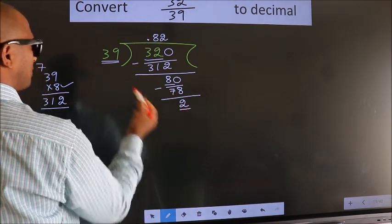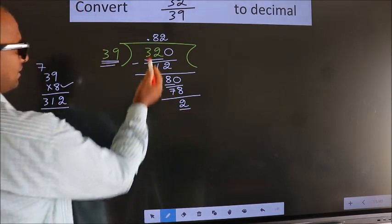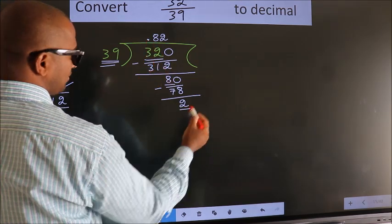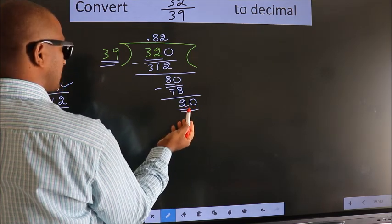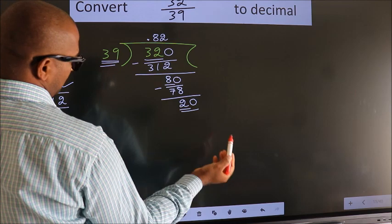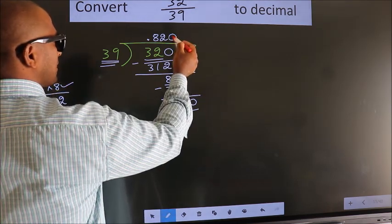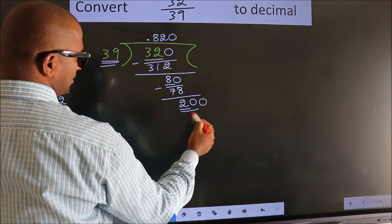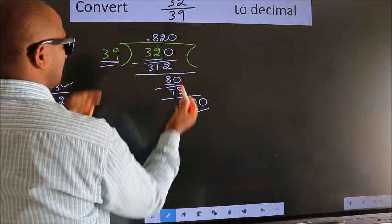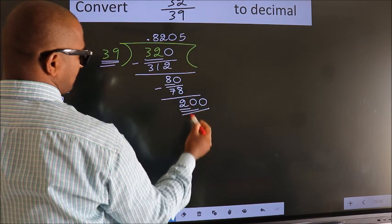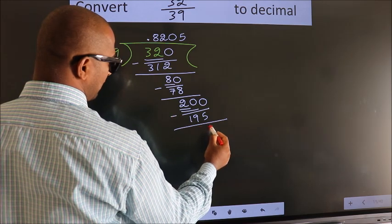Here we have 2. Here 39. 2 is smaller than 39, and we already have the decimal, so we can directly take 0. So 20. 20 is still smaller than 39, so to get one more 0 here, we should put 0 here. So 200. A number close to 200 in the 39 table is 39 times 5, which is 195. Now we subtract, we get 5.